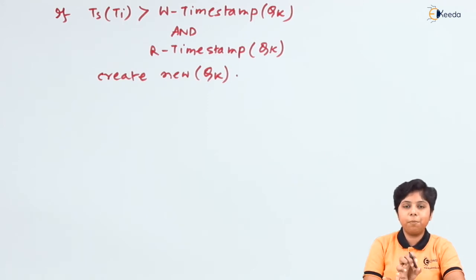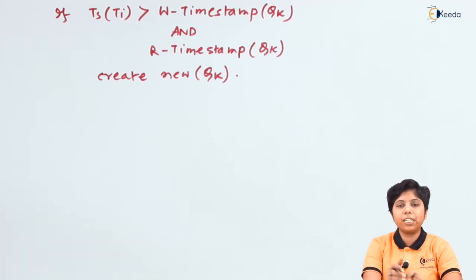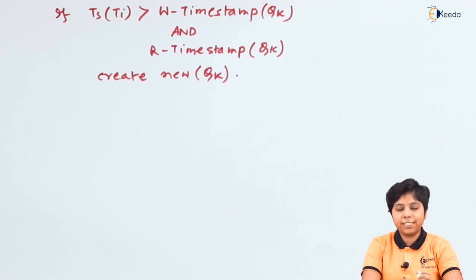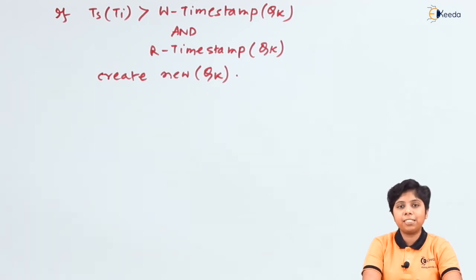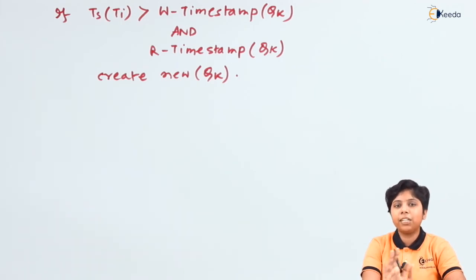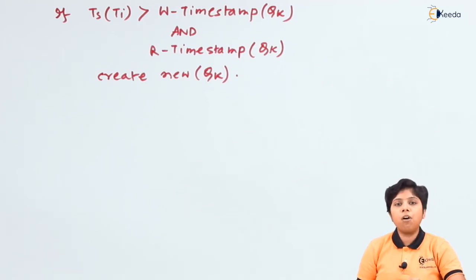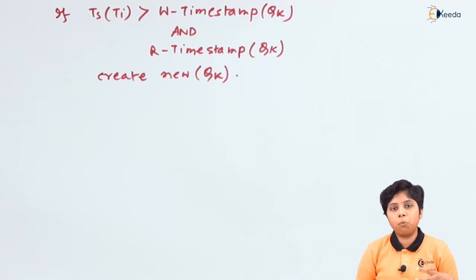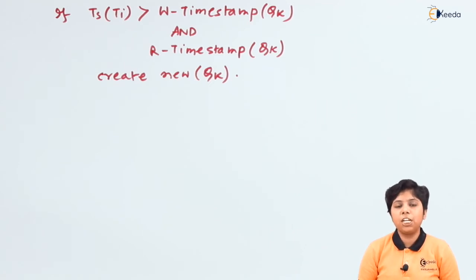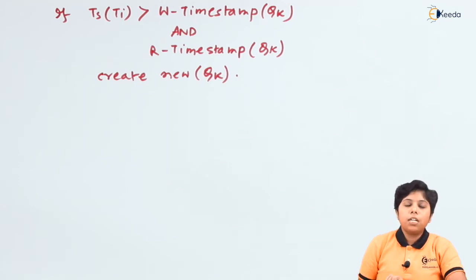Rule one is clear: there is no wait for the read operation — if the content is ready it just reads. The second rule, the timestamp ordering, forces an abort on a transaction if the write is being done too late, meaning the R-timestamp(Q) has already been performed and there is no need to write it since it is past that read operation. We abort and restart the operation so we can do it in a meaningful manner.